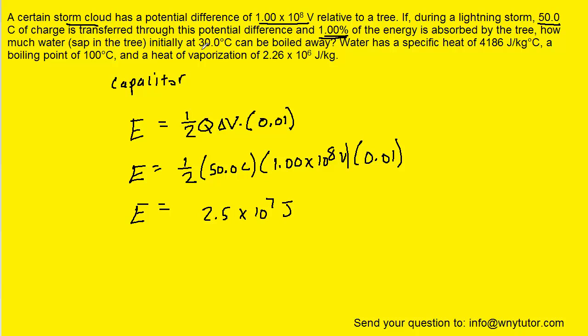Now we'll notice that the water begins at 30 degrees Celsius. And the question is asking us how much of this water can be boiled away. Well, in order to boil water, we first have to raise the temperature of the water from 30 degrees Celsius up to the boiling point, which is 100 degrees Celsius. And that's going to require energy in the form of mass times specific heat times the change in temperature.